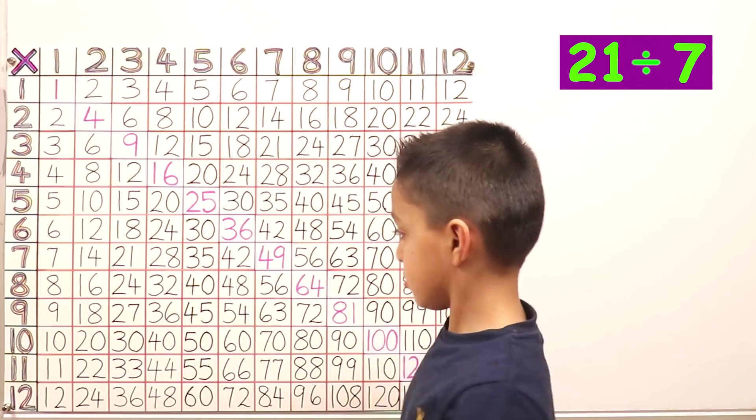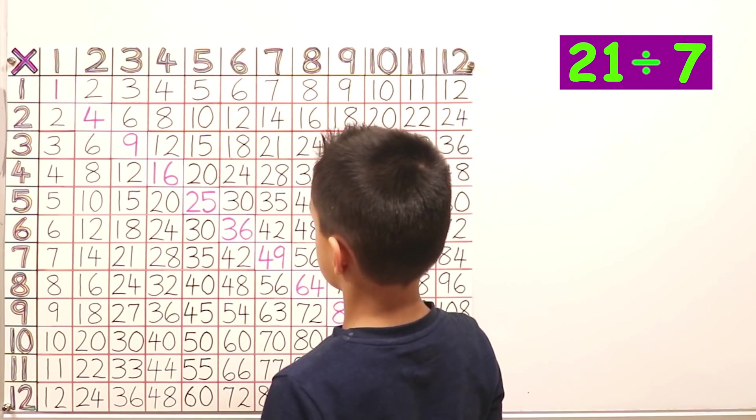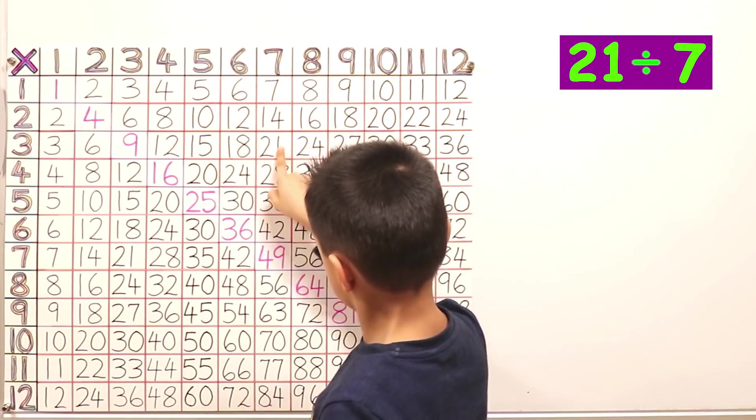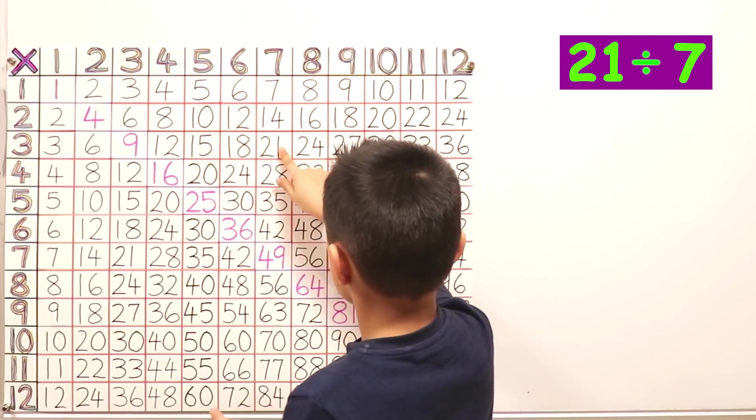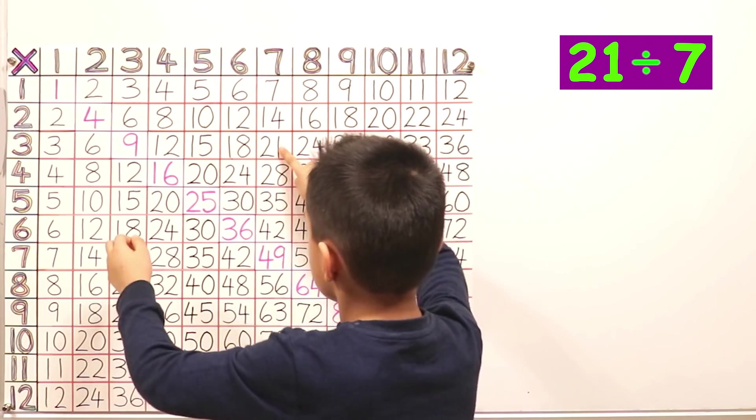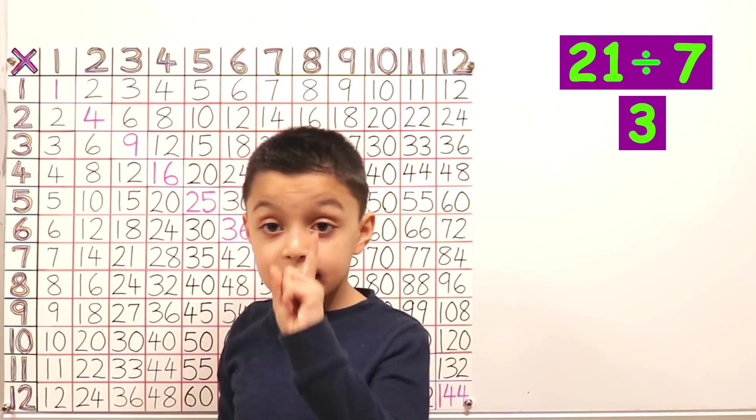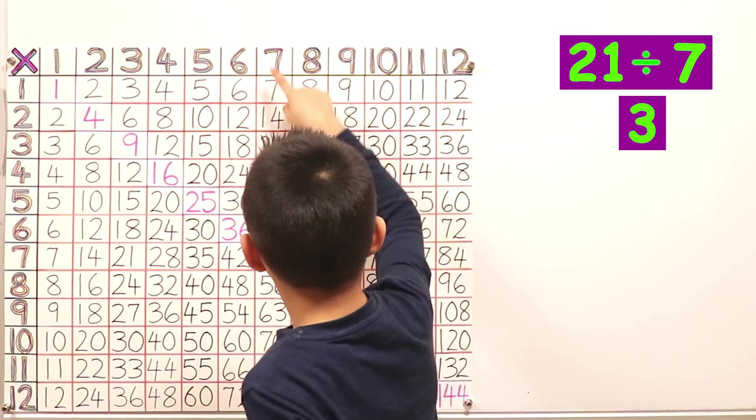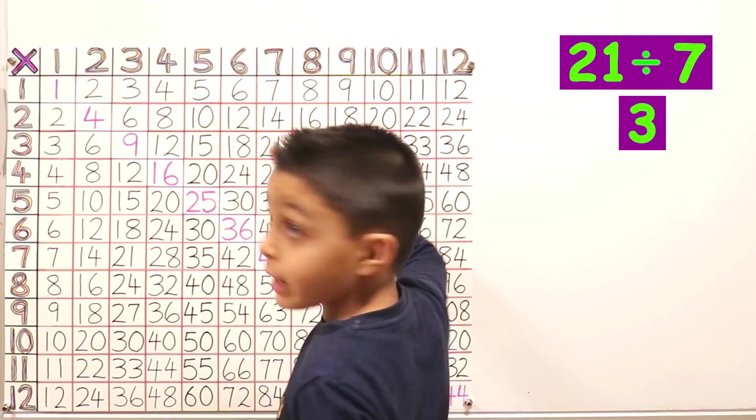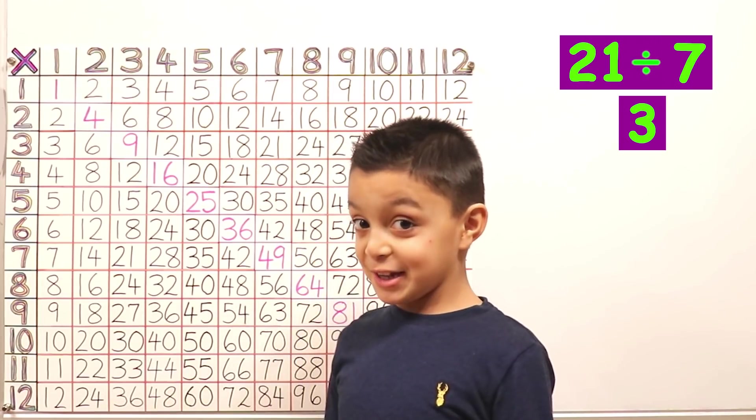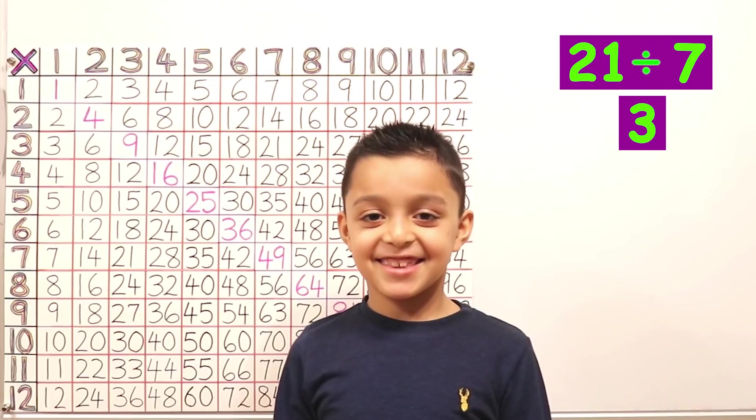Twenty-one divided by seven. So can you explain what you're doing? I have to find twenty-one, which is right here. In the seven times table. Yes. And then you go to the side and then it equals three. And another easier way to find it is one, two, three. Okay. Are you speaking in an accent? Yes, I very am. Okay.